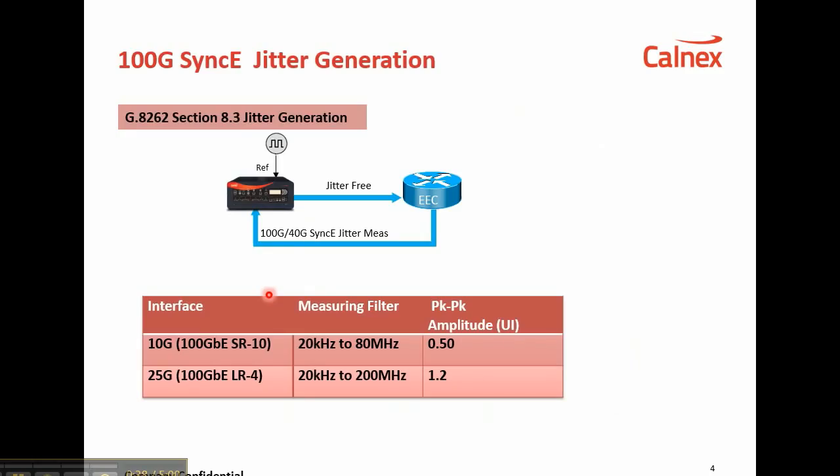This is a test setup for a jitter generation measurement. You need to apply a jitter-free stimulus — this could be the Paragon 100G with the jitter switched off — and jitter measurement is performed on port 2 of the Paragon 100G.